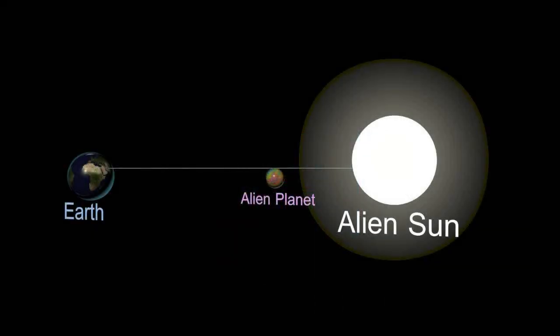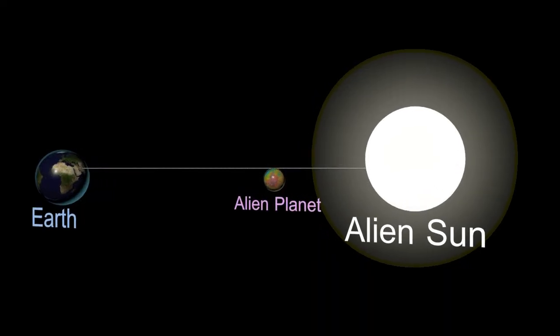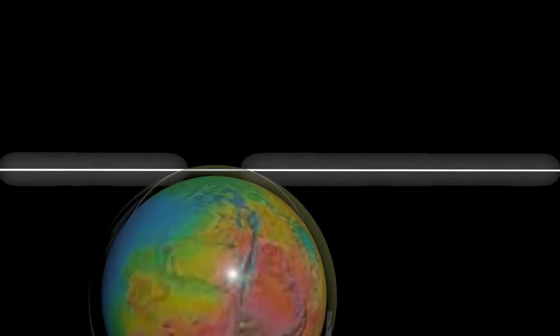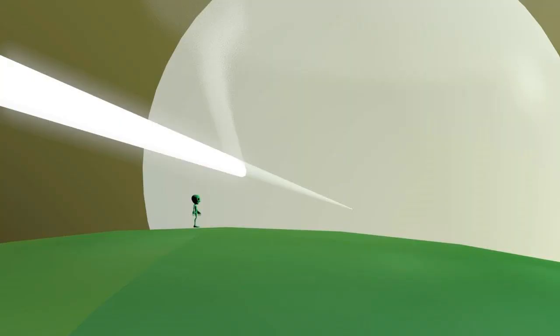So why should you care? Well this setup, not to scale, is quite common. An alien sun is shining alien sunlight through the atmosphere of an alien planet and that light is reaching Earth. Now with the right equipment you can check that light that's passed through the alien atmosphere and you can detect which gases are present.